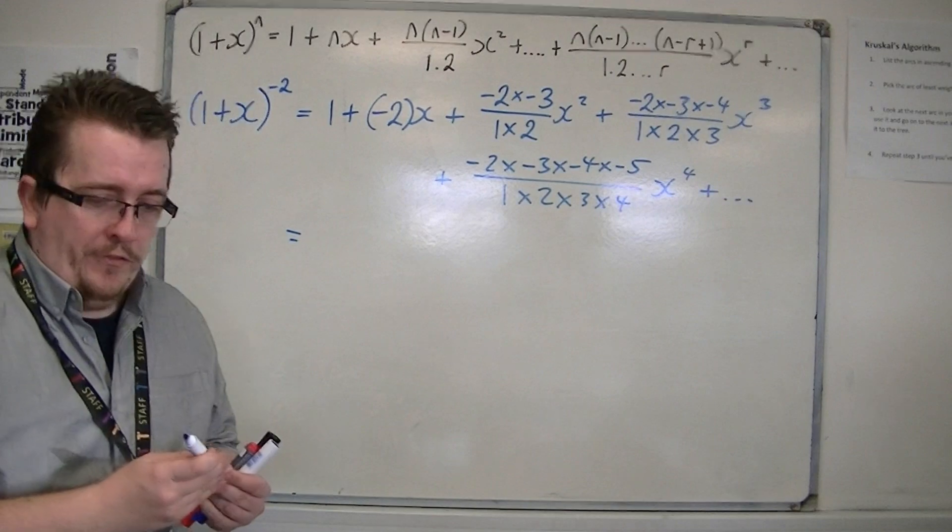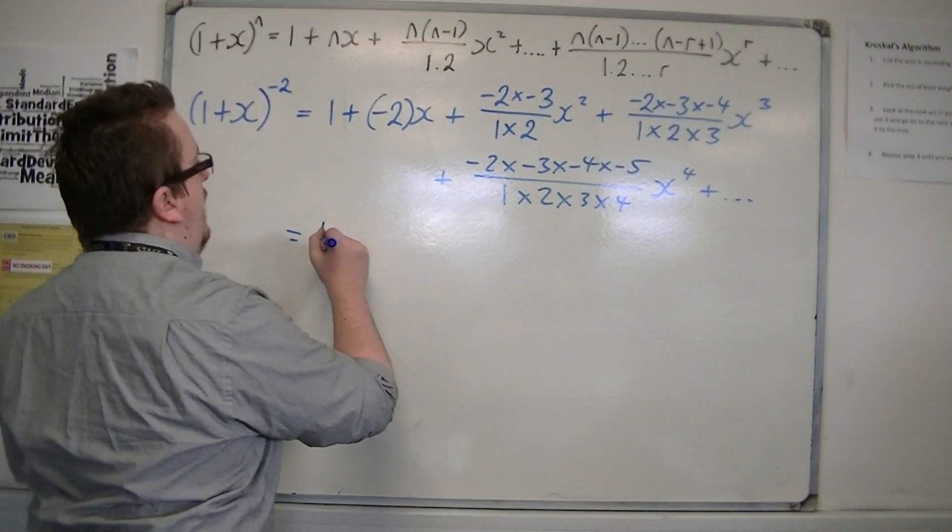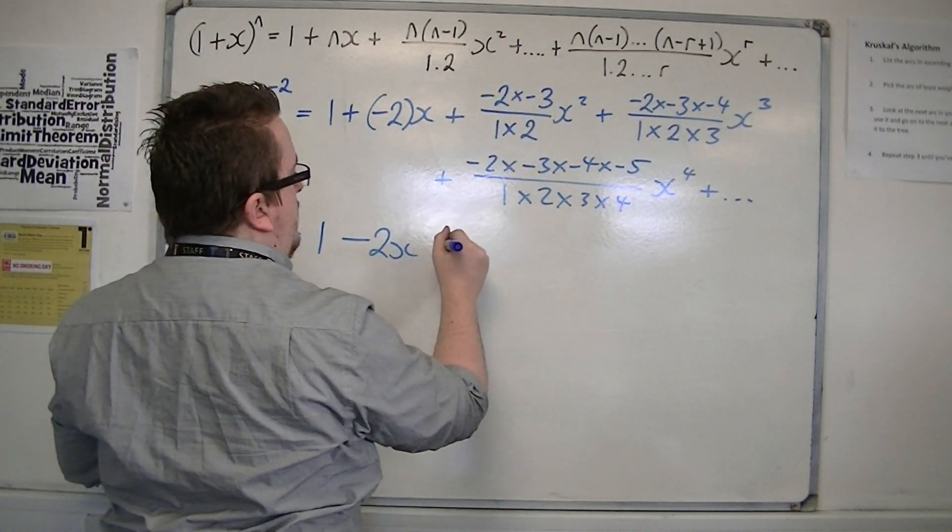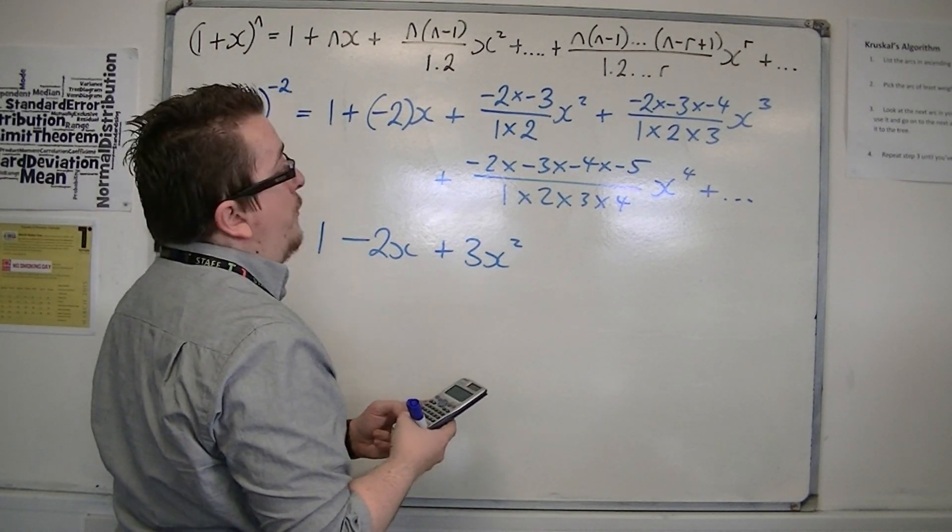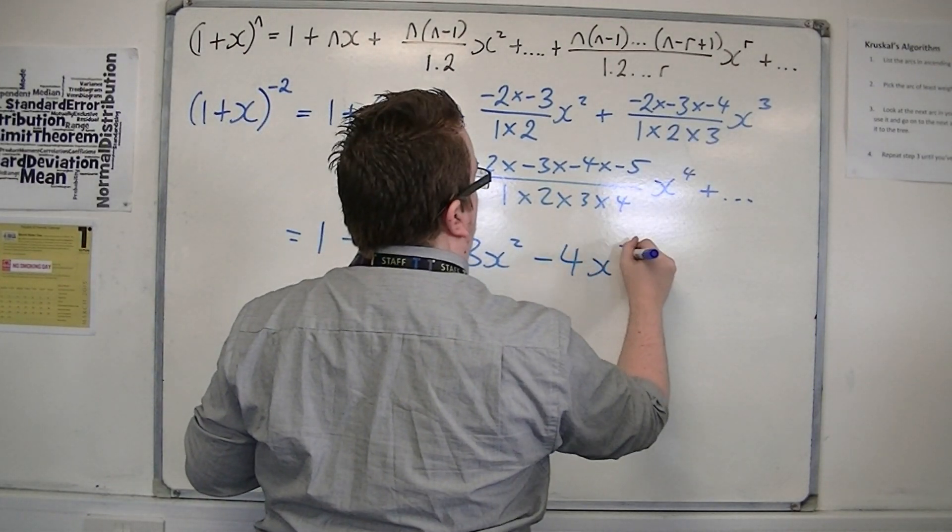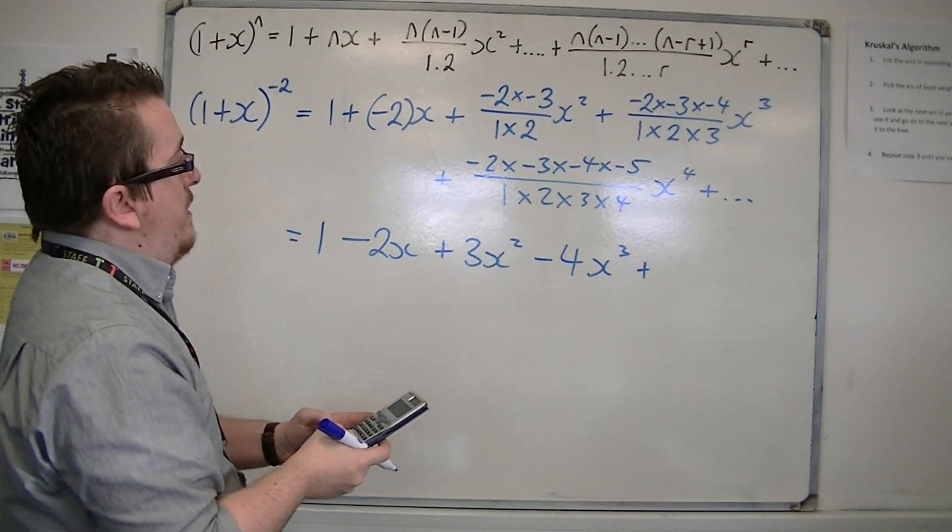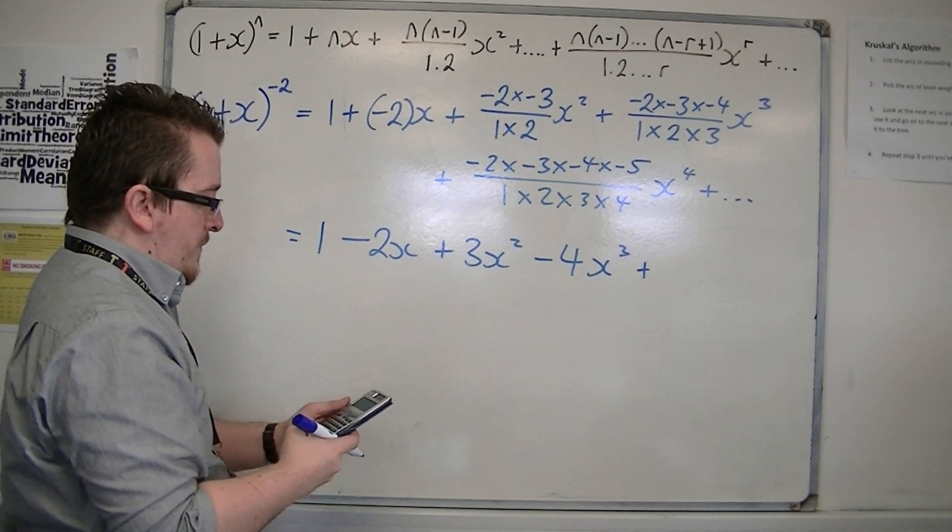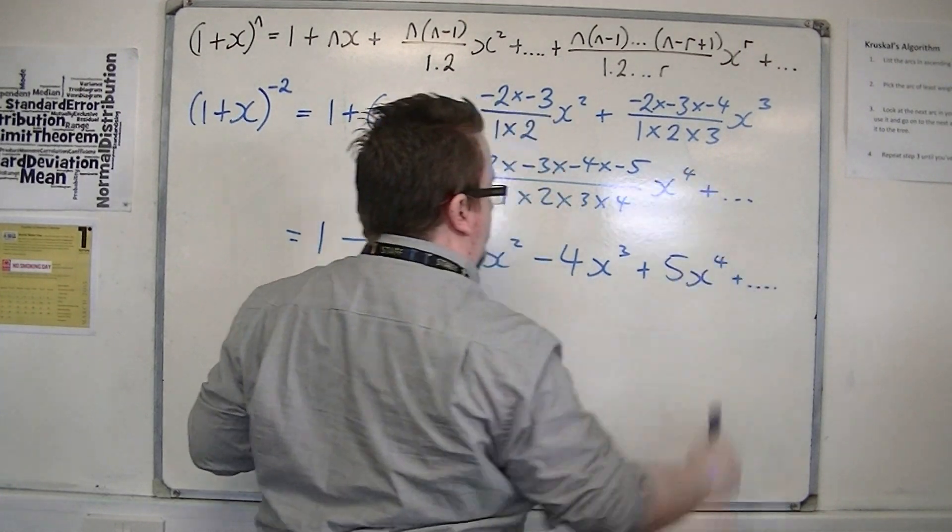So if I simplify this, we're going to have 1 - 2x to start off. I've got 6 divided by 2, so 3x². I've got 2 times 3 times 4 over 6, so 4, so -4x³. Then I've got 2 times 3 times 4 times 5 over 1 times 2 times 3 times 4, that's 5x⁴, plus more terms.